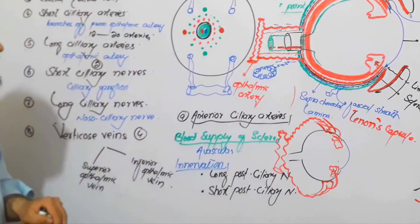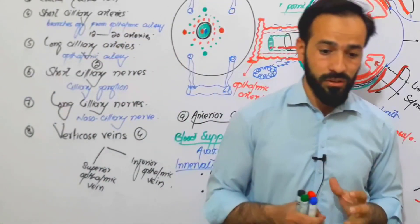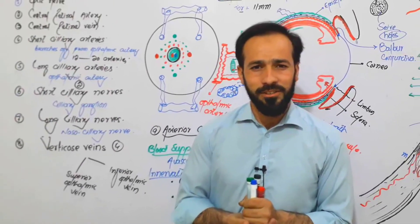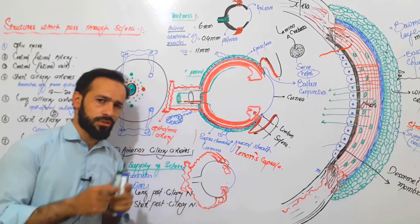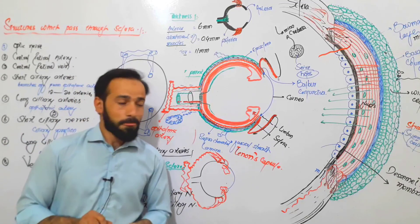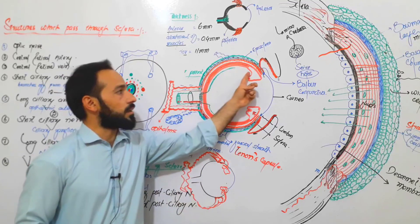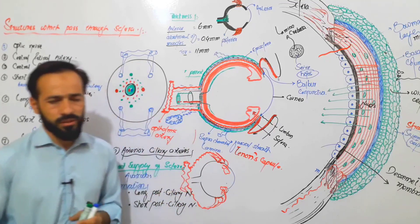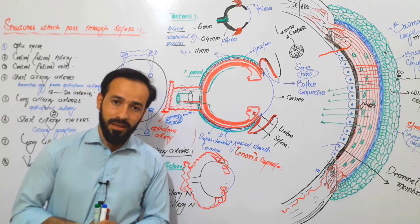Friends, these were the important structures which pass through and pierce the sclera and enter the eye. This concludes our discussion of the sclera — we've recorded about three lectures on it covering structure, composition, and everything. In the next lecture, we will start discussing the choroid layer of the eye and then move further forward to see all the other structures present in the eye. See you in the next lecture — till then, Allah Hafiz.